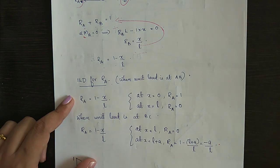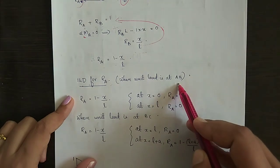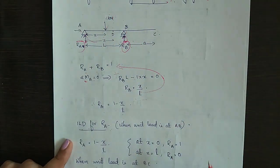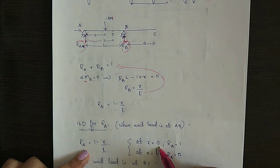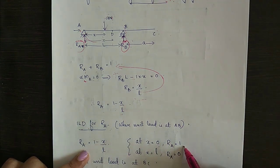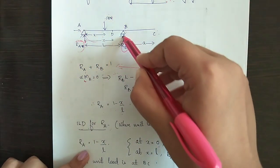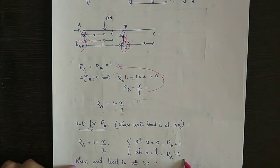Now, to draw the ILD for reaction RA. When the unit load is at AB, RA is 1 minus X by L. At point A, where X is 0, RA becomes 1 minus 0 by L, that is, 1. At point B, where X is L, RA becomes 1 minus L by L, that is, 0.